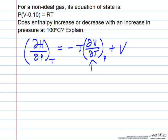So this equation of state, V minus 0.10 is equal to RT over P, or V is equal to 0.10 plus RT over P.